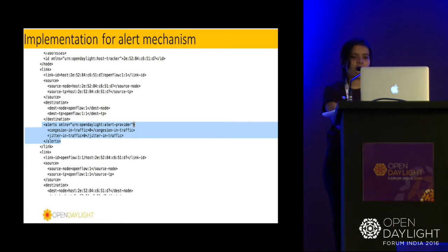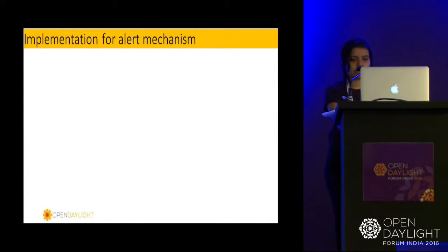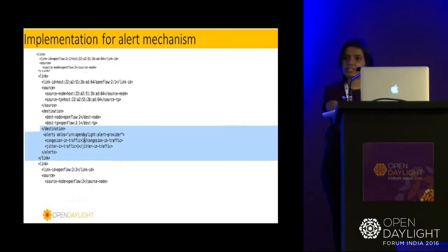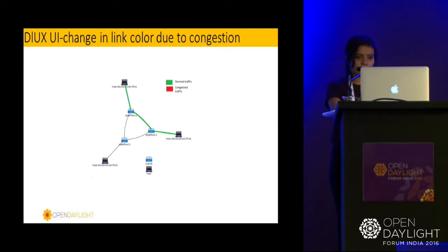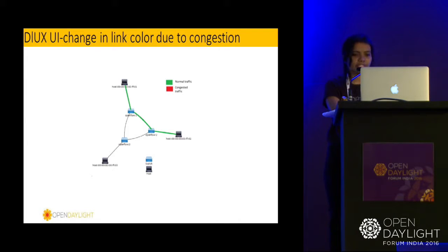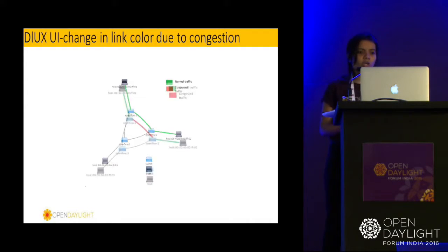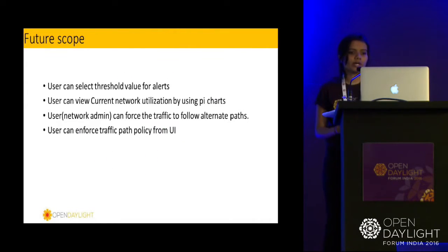Now I will show you how this actual implementation looks in DLux. You can see we have two tabs — normal traffic and congested traffic. The user can easily see that there is a normal traffic flow for this network link, and again for another link something has gone wrong — there is some congested traffic.